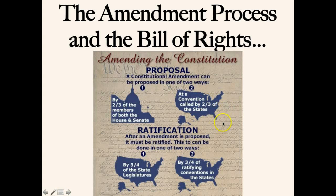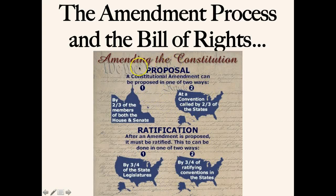In this image here, you see the breakdown of how we can change our Constitution by making amendments. You'll notice how Congress is involved here and the states are involved down here. So you have Congress proposing and the states can ratify. Now, the states can propose amendments, but it is something that has never really happened, so don't worry about it.